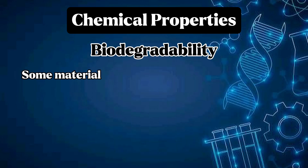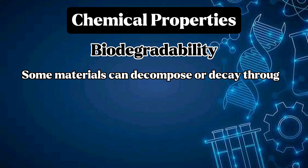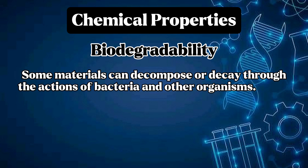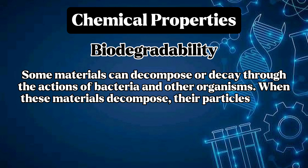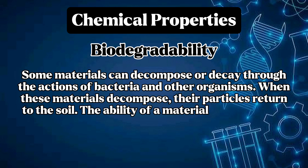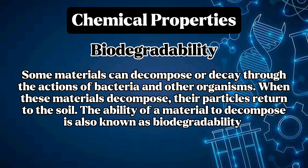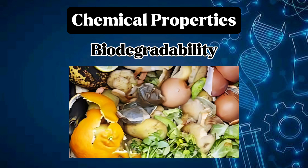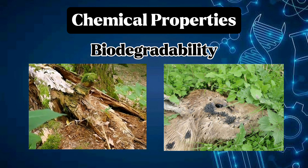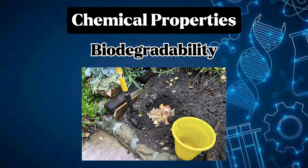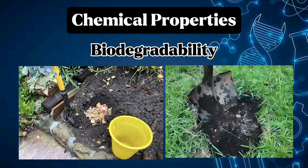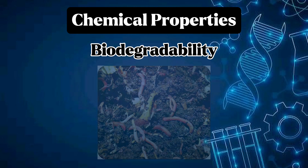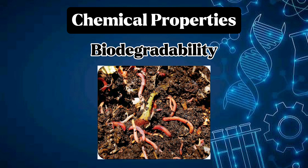Some materials can decompose or decay through the actions of bacteria and other organisms. When these materials decompose, their particles return to the soil. The ability of a material to decompose is known as biodegradability. Examples of biodegradable materials are fruit and vegetable peelings, plant clippings, and dead plants and animals. They can be buried in a compost pit, where earthworms and microorganisms gradually break them down into compost, which is a natural fertilizer.